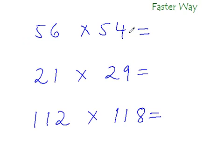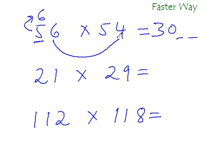So what is 56 times 54? After 5, the next number in counting is 6, so 6 times 5 is 30. For the last two digits, find the product of the units digits: 6 times 4 is 24. So the answer is 3024.